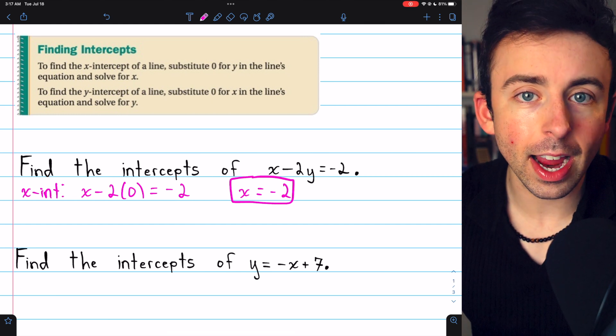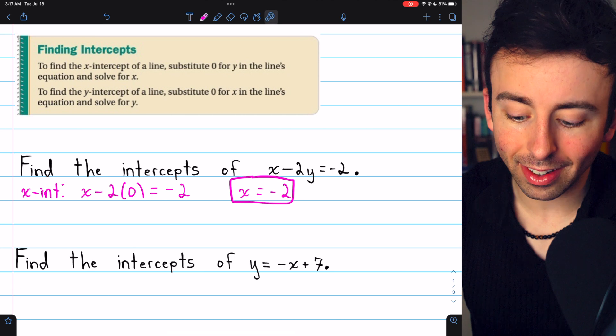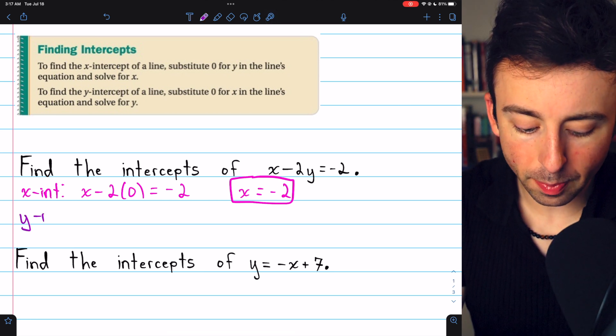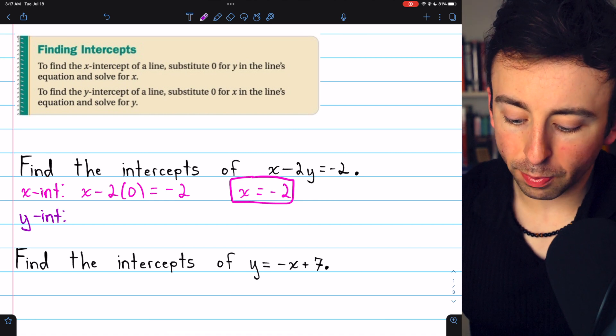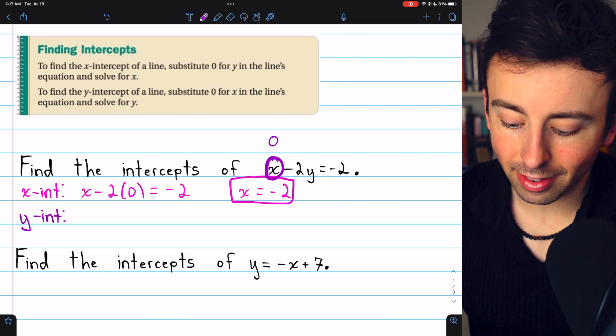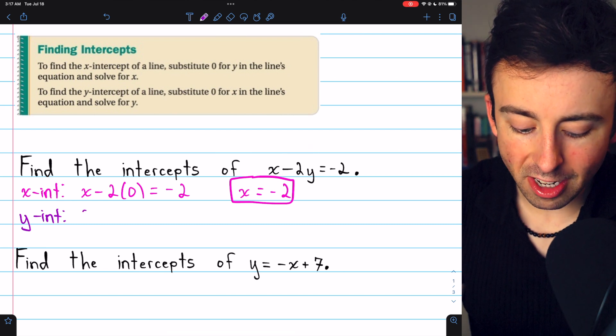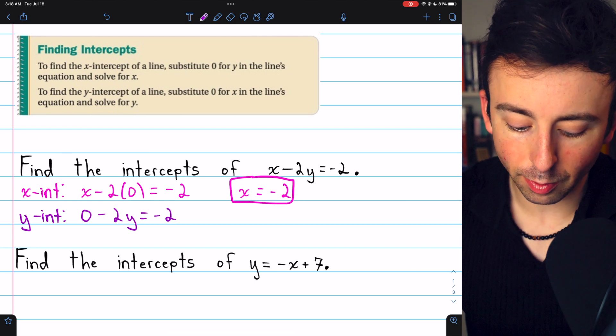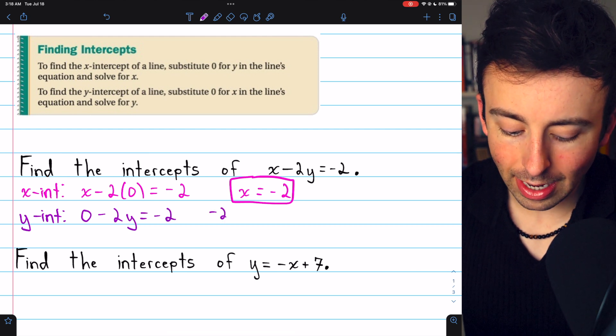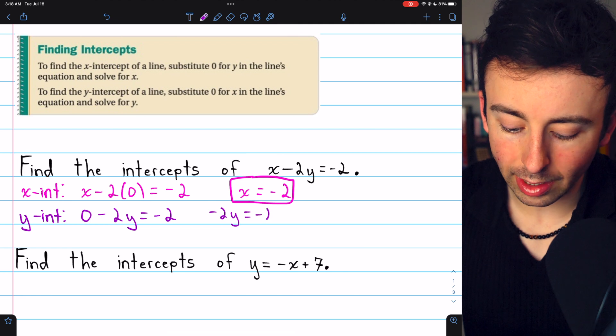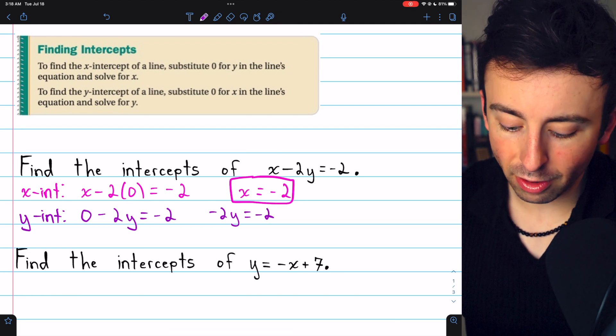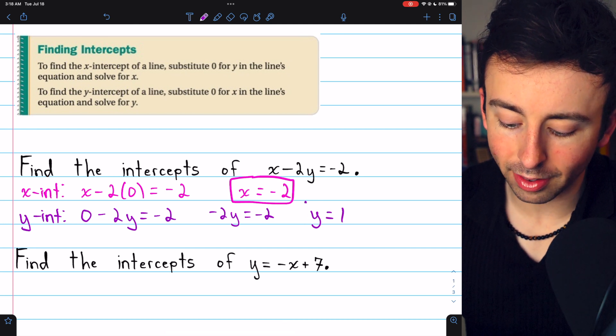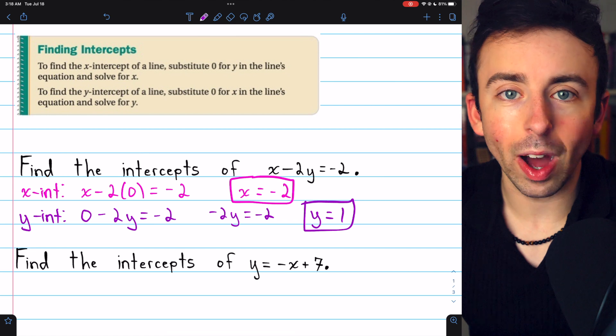If we were to graph this line, it would pass the x-axis at x equals negative 2. To find the y-intercept, we do a very similar thing. We just plug 0 in for x and then solve for y. Plugging 0 in for x, we have 0 minus 2y equals negative 2. That means that negative 2y equals negative 2, and then we can divide both sides by negative 2 to get y by itself and find that y equals positive 1. That's the y-intercept.